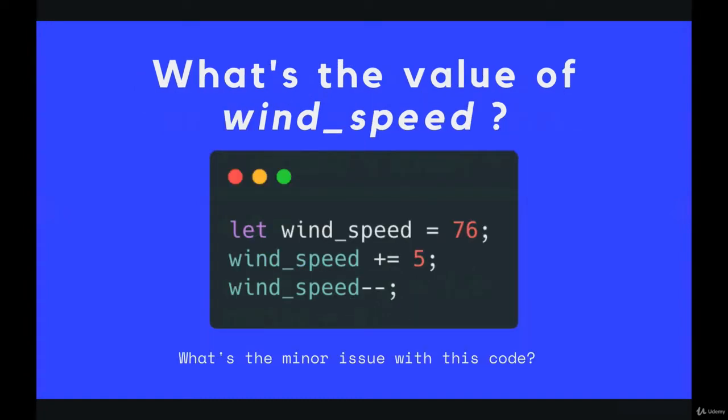And the final one, what's the value of wind_speed here? And then there's a second note. What is the minor issue with this code? So two questions. What's the value of wind_speed at the end? And what's the minor issue with the code?